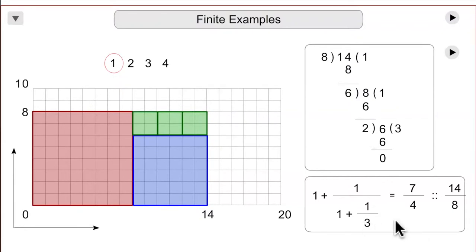The Continued Fraction itself would look something like this: 1 plus 1 third, which would be 4 thirds. 1 over 4 thirds would be 3 fourths, and that would be 4 fourths plus 3 fourths is 7 fourths, which is proportional to 14 eighths.